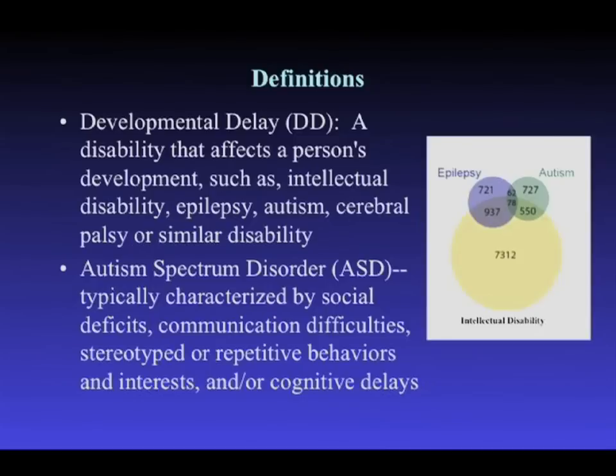When I refer to developmental delay in my talk, I'll be referring to this very broad spectrum of phenotypes, including craniofacial as well as congenital heart defects. When I refer to autism, specifically autism spectrum disorder, I'll be referring to the ADIR and ADOS criteria used to define autism, and I'll distinguish those from the large-scale study versus the targeted sequencing-based studies we've done.